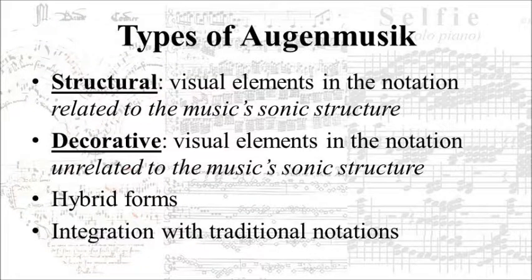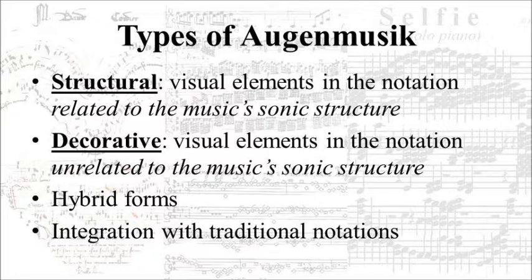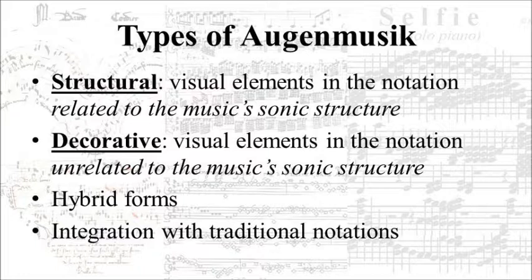The first of these is structural Augenmusik, which means that the visual elements in the notation are related to the music's sonic structure. The second is decorative Augenmusik, which means that the visual elements in the notation are not related to the sonic structure. This is not to say decorative Augenmusik cannot be symbolically impactful or artistically significant — it just means the visual elements exist independently from any audible implications. We can also have hybrid forms combining both structural and decorative elements, and all of these can potentially exist in combination with aspects of traditional notation systems that remain unaffected.